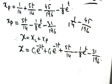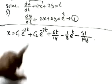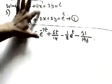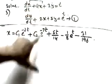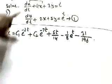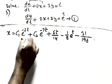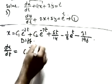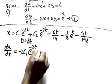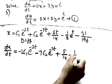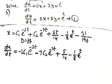Now we have x = xc + xp. To find y, we must also find dx/dt. Differentiating x: dx/dt = −2c₁e^(−2t) − 7c₂e^(−7t) + 5/14 − (1/8)e^t (since derivative of e^(−2t) brings down −2, of e^(−7t) brings down −7, and the constant term differentiates to 0).